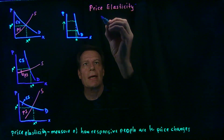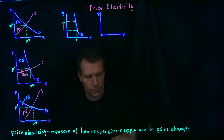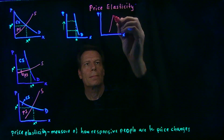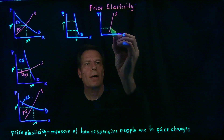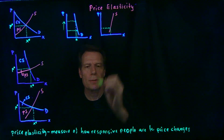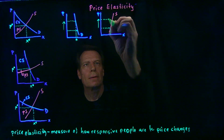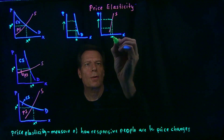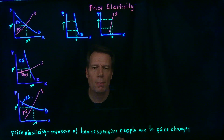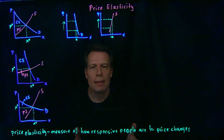Or suppose that we had a steep supply curve. Starting with some initial price, we read off the quantity supplied by firms, and then we raise that price by a lot. Even such a large increase in price would have very little effect on the quantity that these firms supply to the market. We would say that these firms are relatively price inelastic.